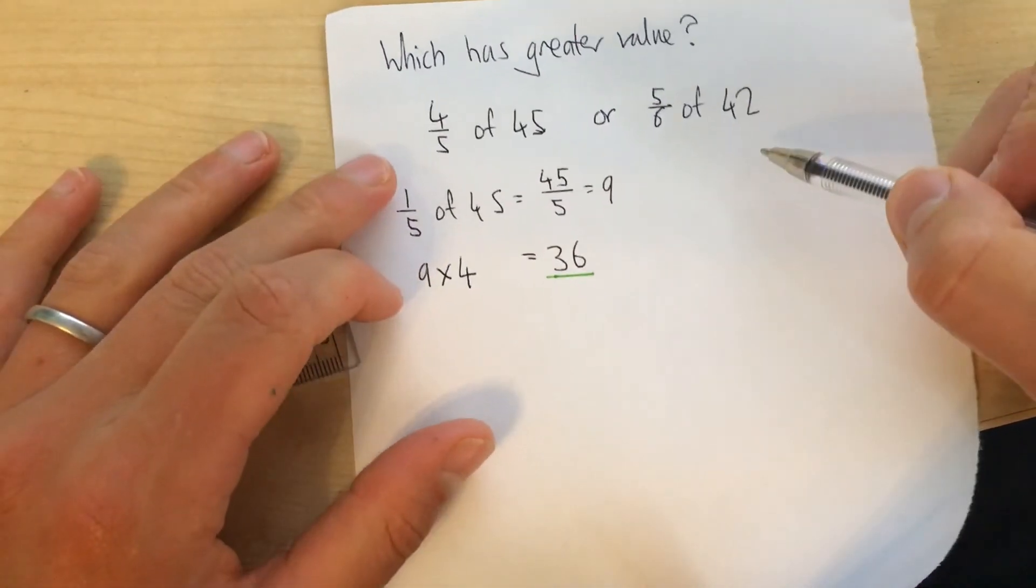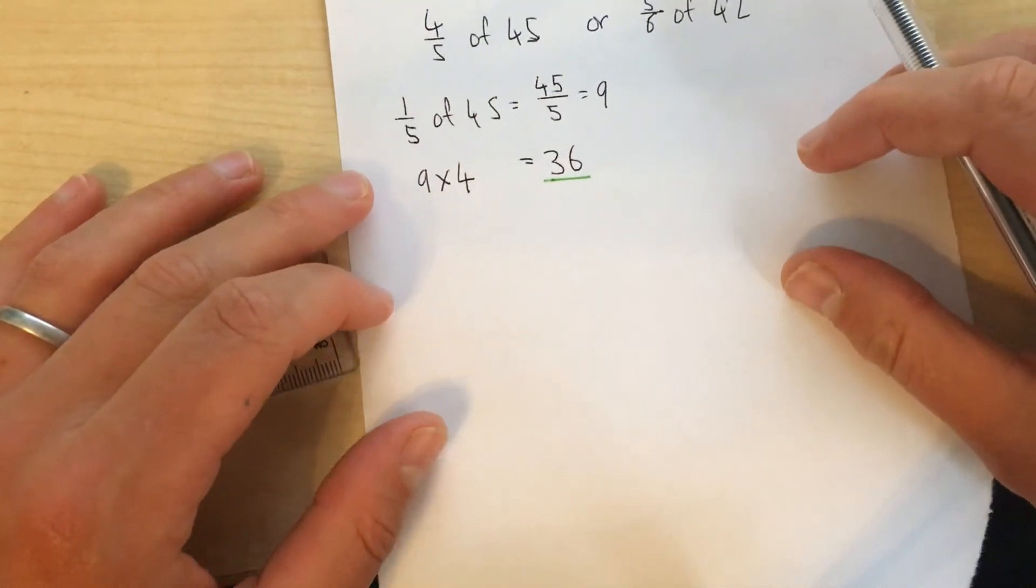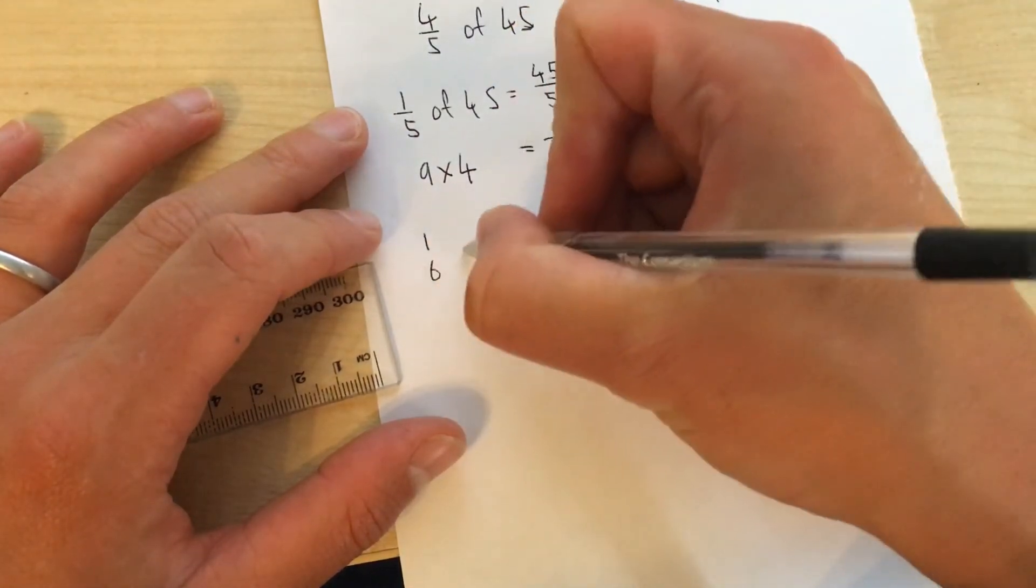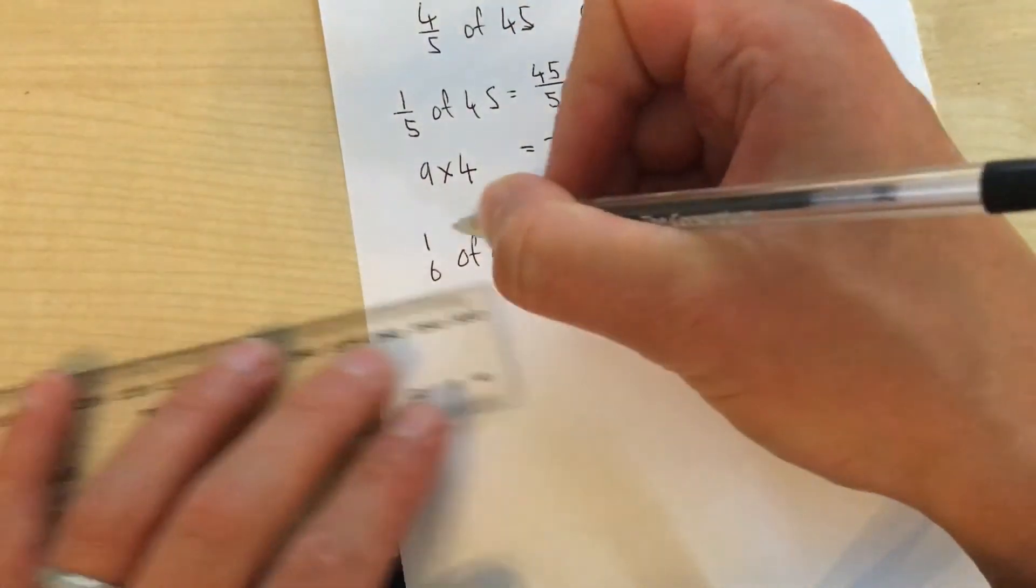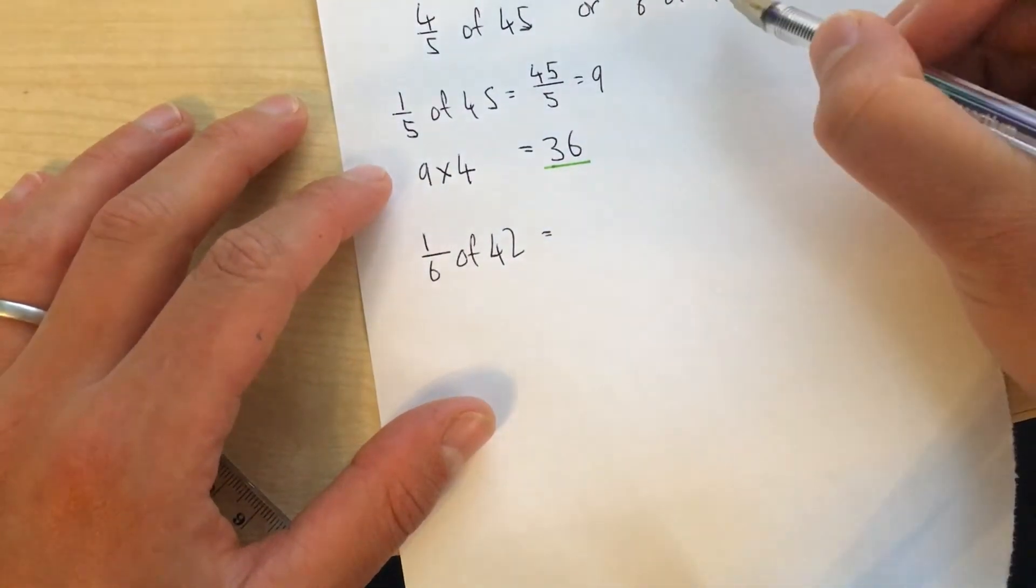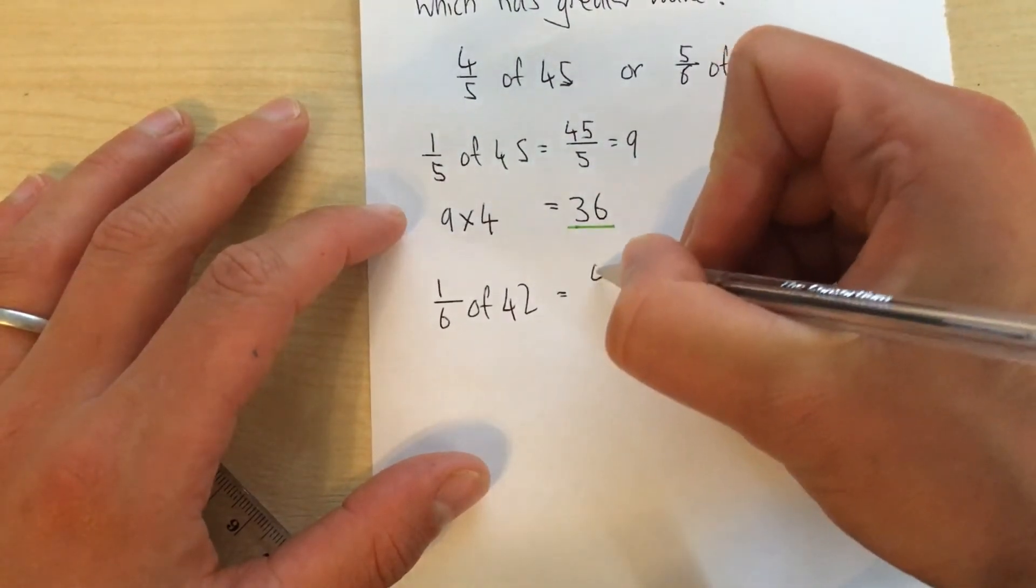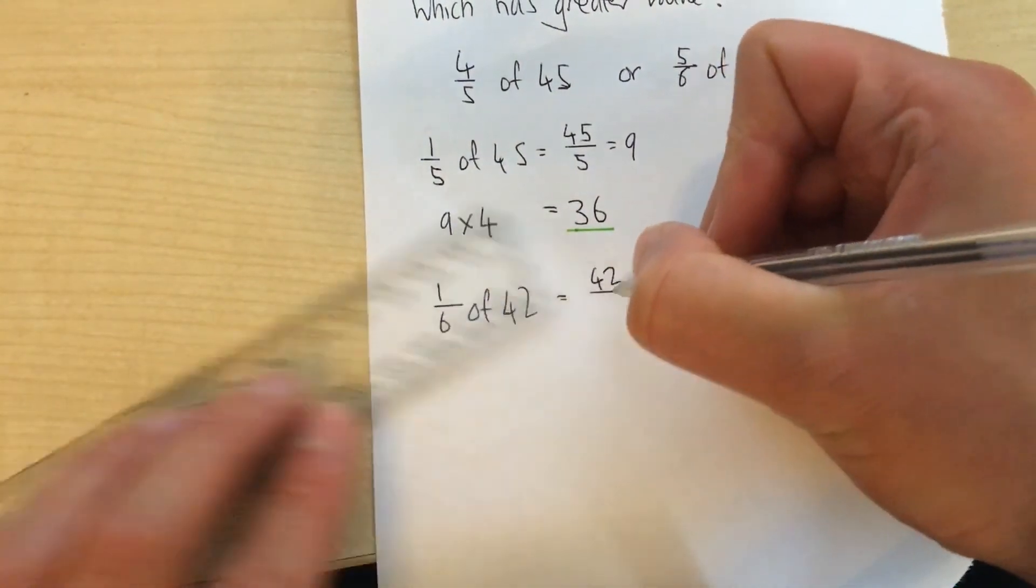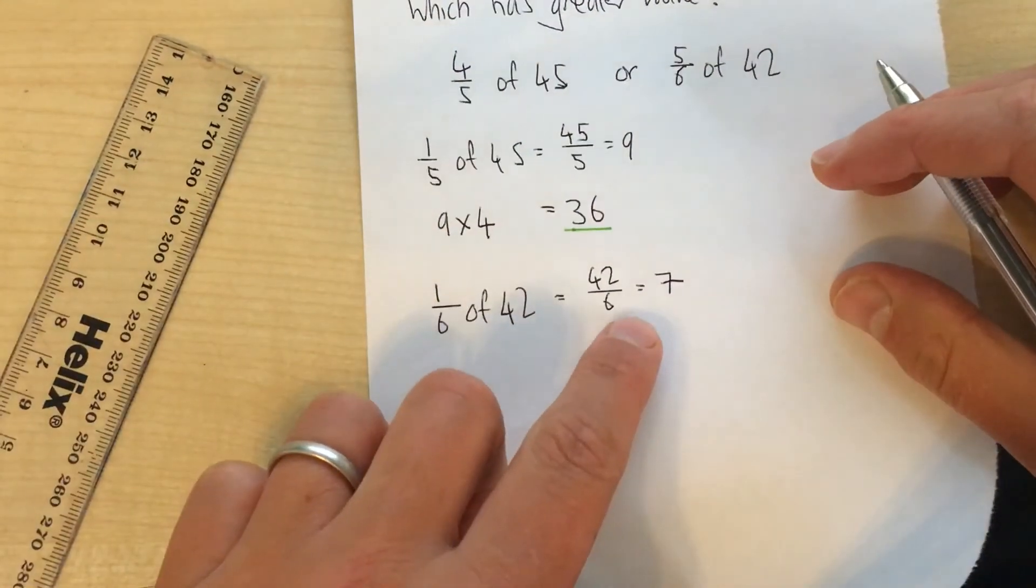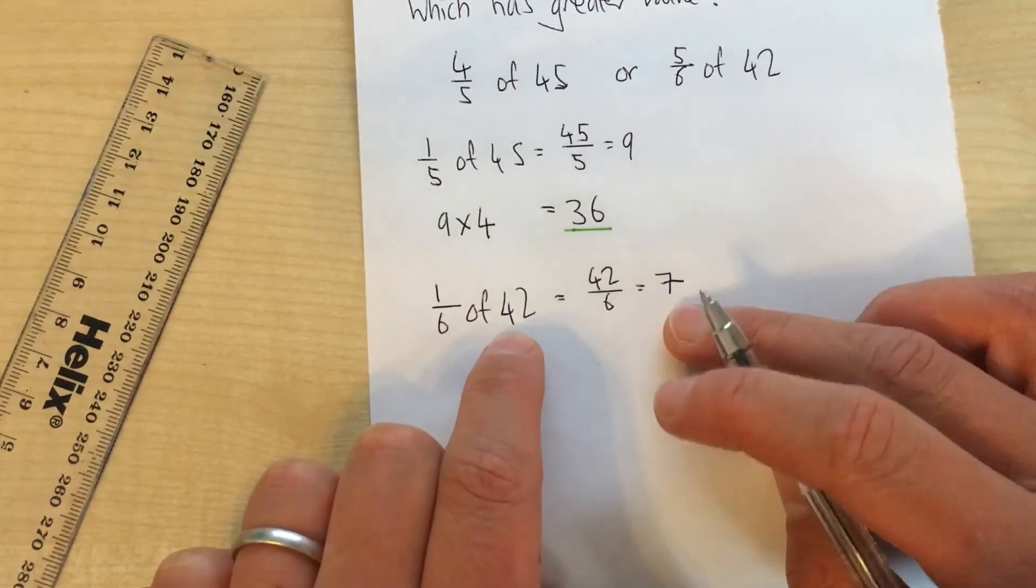Let's go to the other one over here. 5 sixths of 42. First of all, I find 1 sixth. 1 sixth of 42 equals... Well, I'm going to take 42 and divide by the denominator. 42 divided by 6 is 7. It equals 7. So 1 sixth of 42 is 7.